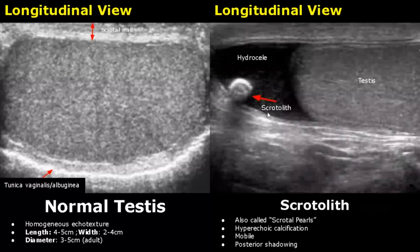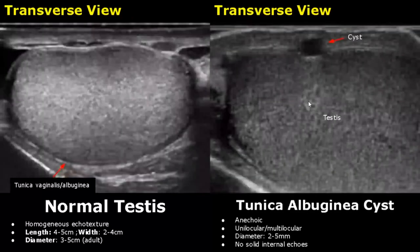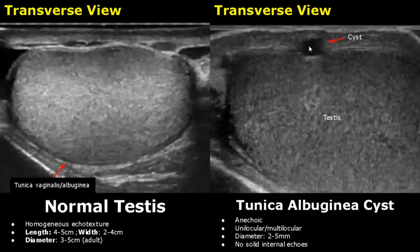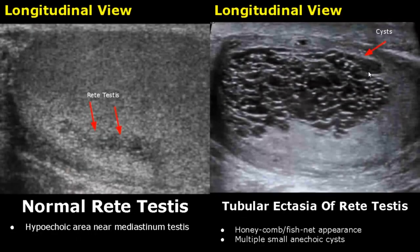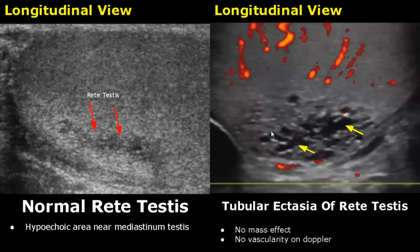A scrotalith is a calcification in the scrotal sac. It will appear hyperechoic, can be mobile, and often has posterior shadowing. In this image we can also see a hydrocele. Tunica albuginea cyst is a small anechoic cyst in this layer which may be unilocular or multilocular with septations. The diameter is between 2 to 5 mm and there are no solid internal echoes. In tubular ectasia of the rete testis there are numerous small anechoic cysts giving a honeycomb or fishnet appearance. There is no internal flow on Doppler and no mass effect, which differentiates it from testicular tumors and cancers.